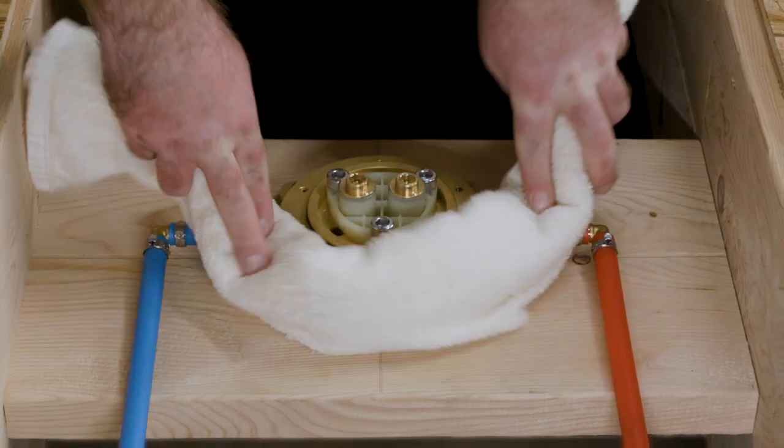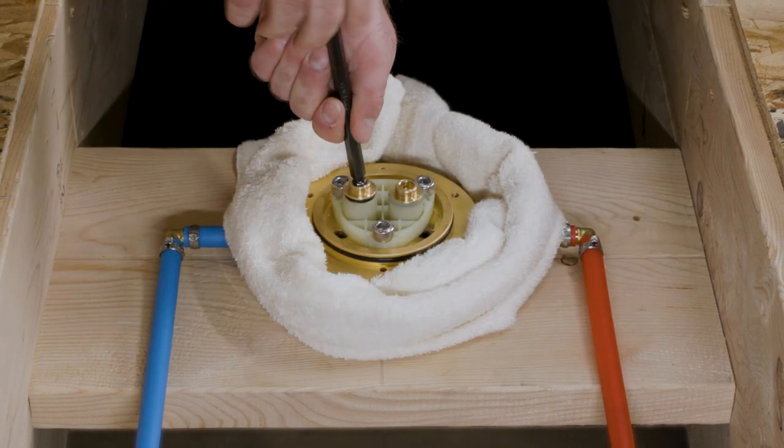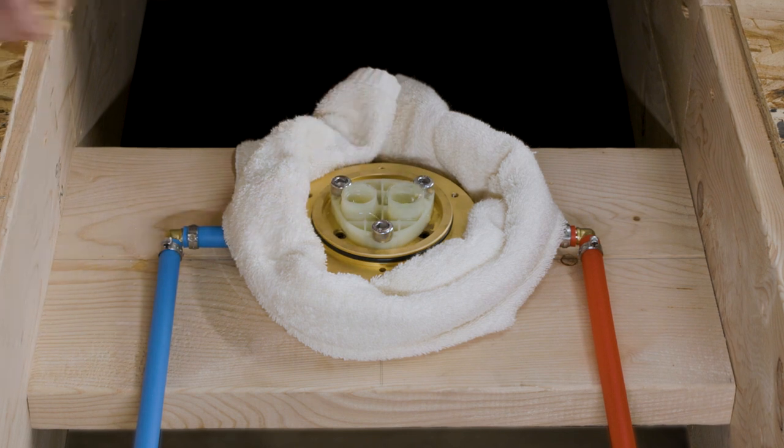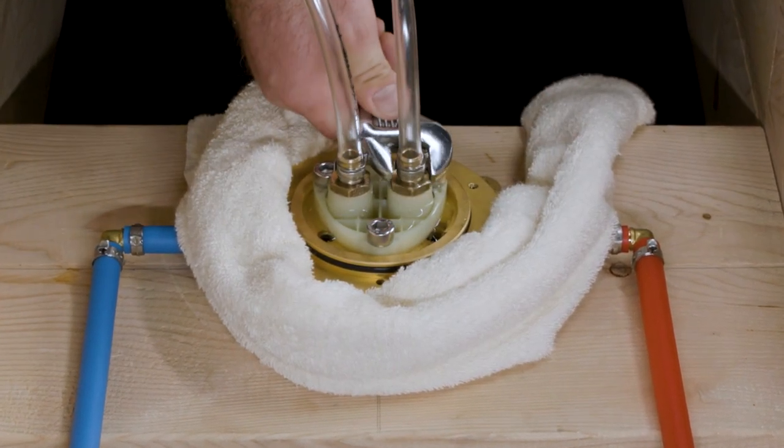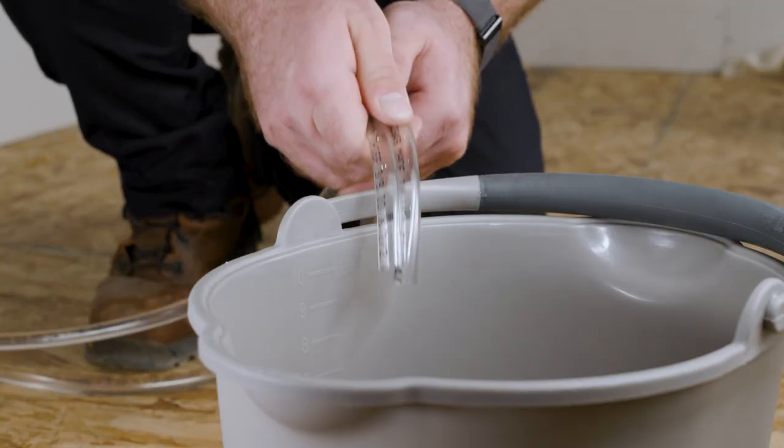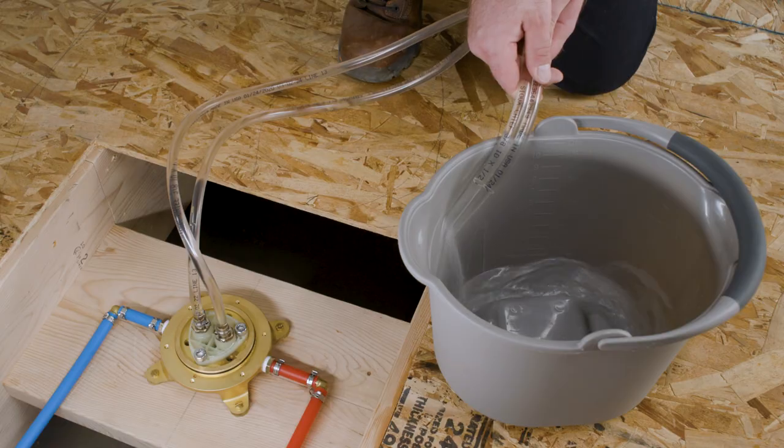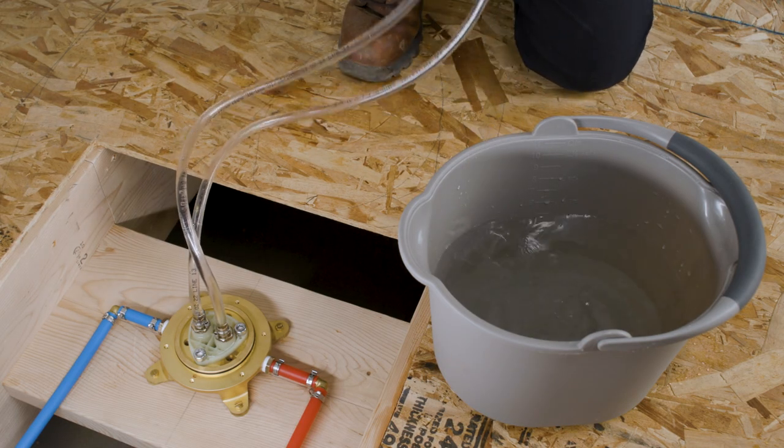You can flush hot and cold lines individually or both at the same time. We'll flush both lines at once. Remove the test plugs from the outlets. Attach the adapters with half-inch NPSM milled threads to each outlet. Attach adapters to compatible threaded hoses. Direct the other end of the hoses into the bucket. Turn on the water supply valve and run until the lines are fully flushed and no debris remains in the lines.